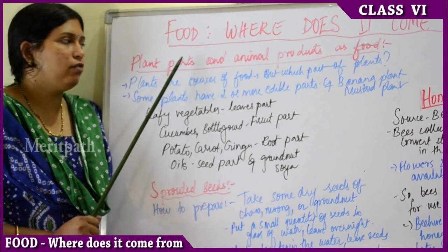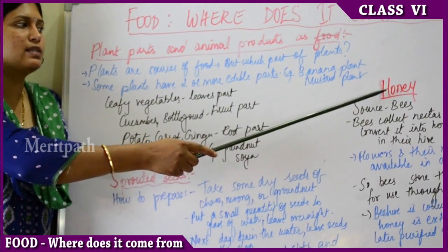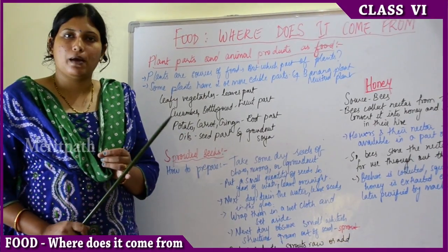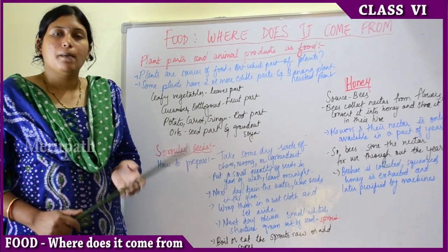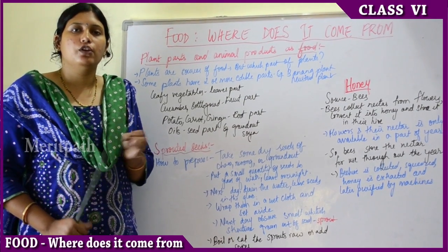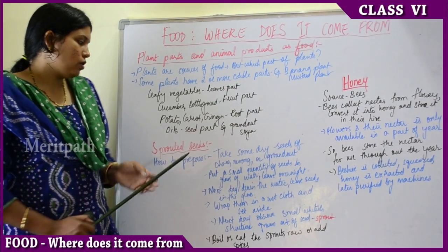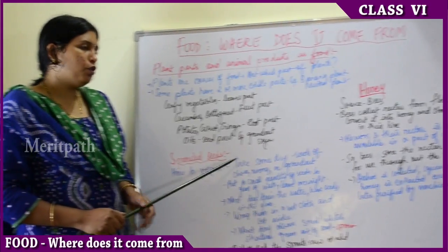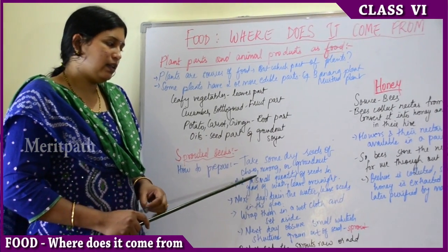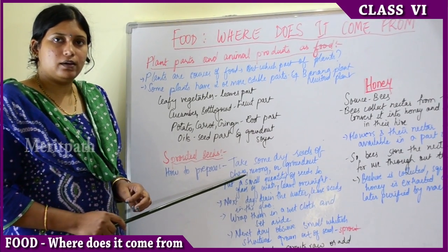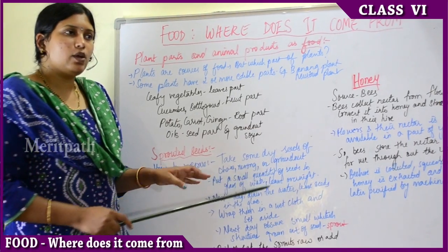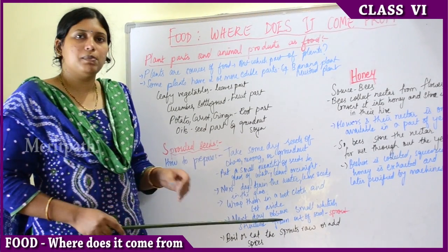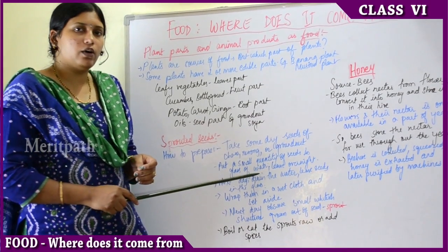We will take one plant part example — sprouted seeds — and one animal product example — honey — and see how those act as food. Sprouts are now available in supermarkets and are also made at home because sprouts are a healthy diet, free of fat and cholesterol. To prepare sprouted seeds, take a dry seed of chana dal, moong dal, or groundnut — a handful of seeds — and soak them in a glass of water overnight.